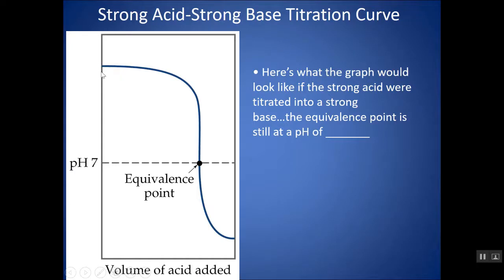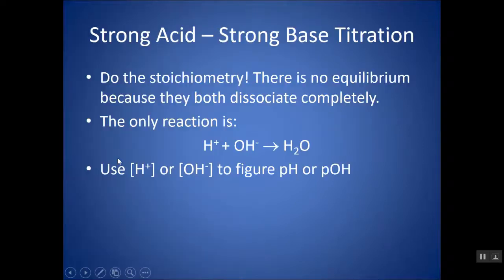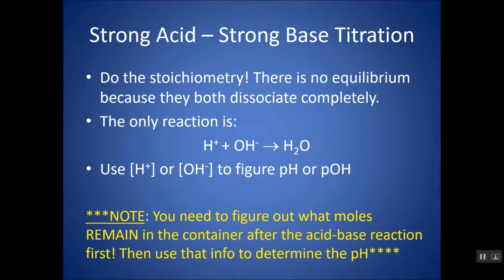If you start with a base in your container and add acid, the titration curve is flipped: you start with a high pH, end with a low pH, but the salt at the equivalence point still has a pH of 7 for a strong acid, strong base combination.